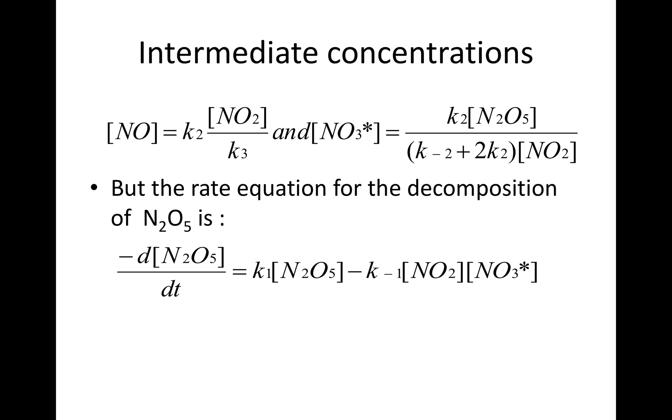but the rate equation for the decomposition is -d[N₂O₅]/dt = k₁[N₂O₅] - k₋₁[NO₂][NO₃*]. So if we obtain expressions for NO₃* we can now substitute it in this rate equation